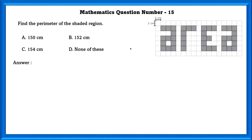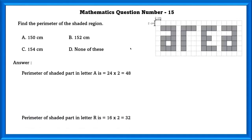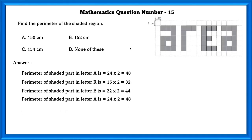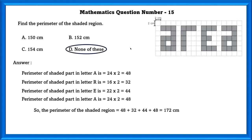Mathematics question number 15. Find the perimeter of the shaded region. Perimeter of the shaded part of letter A equals 48, R equals 32, E equals 44, and A equals 48. So the total perimeter of the shaded region equals A plus R plus E plus A, which equals 172 cm. This is not in the options, so the answer is none of these.